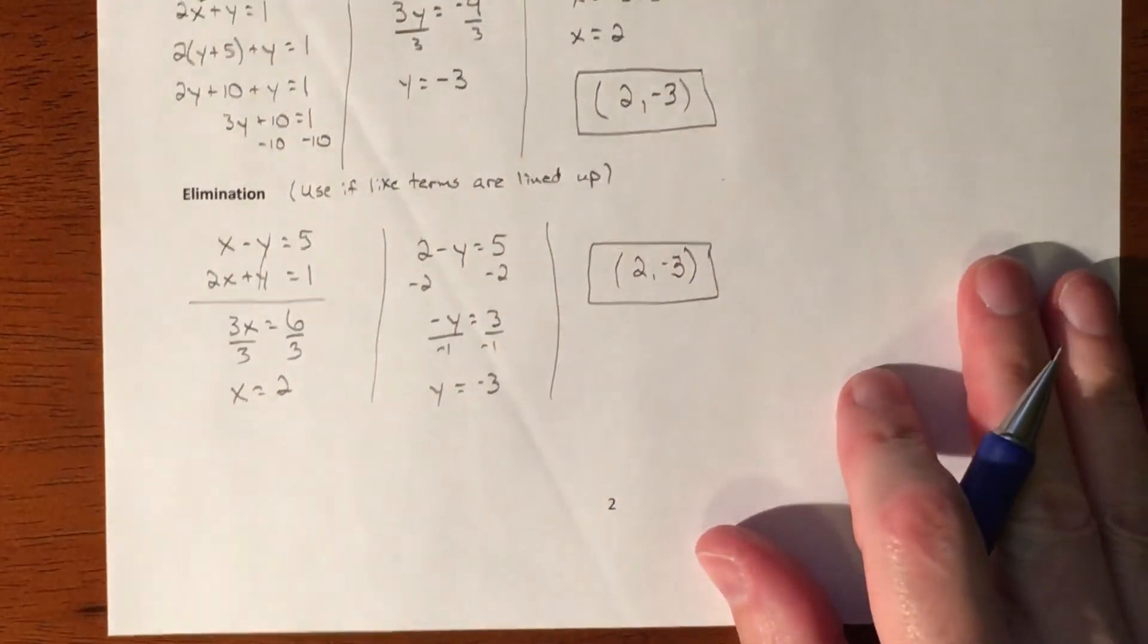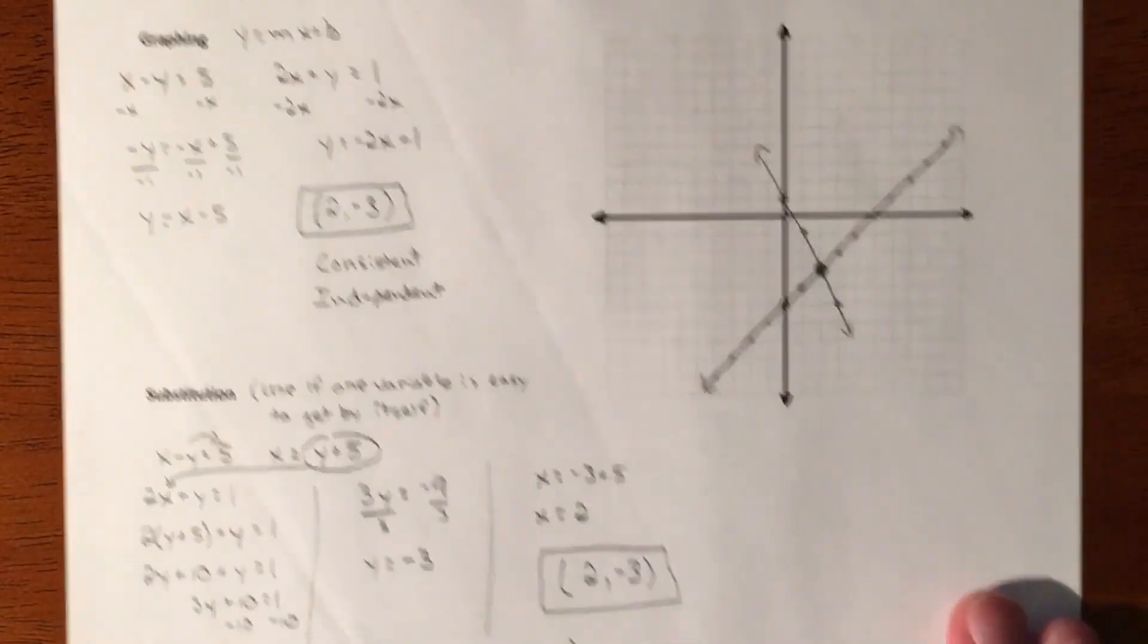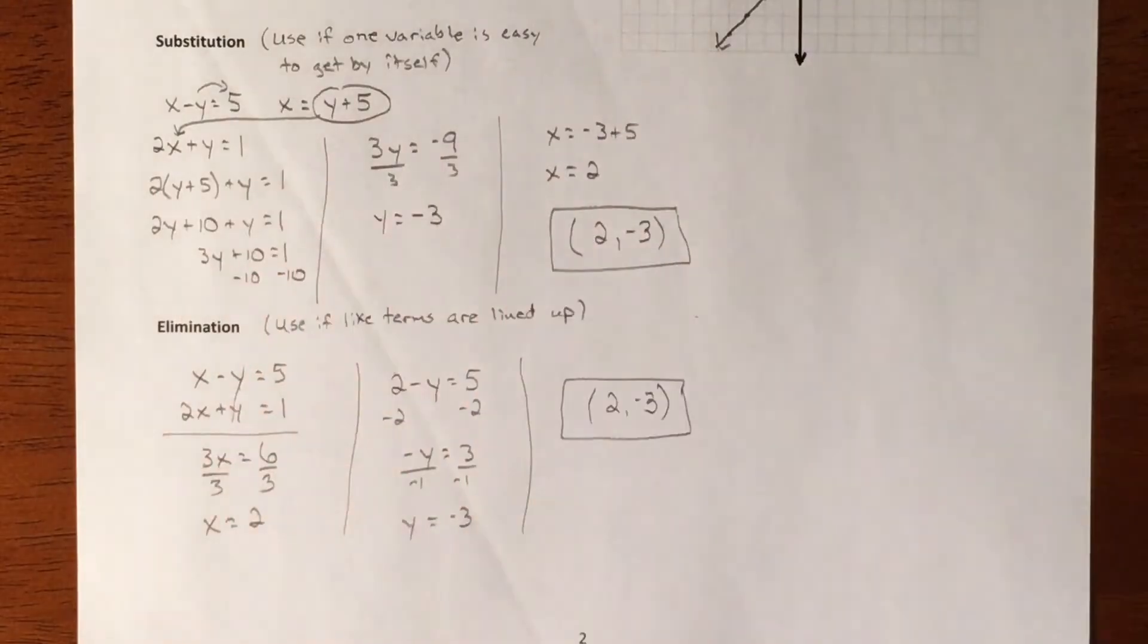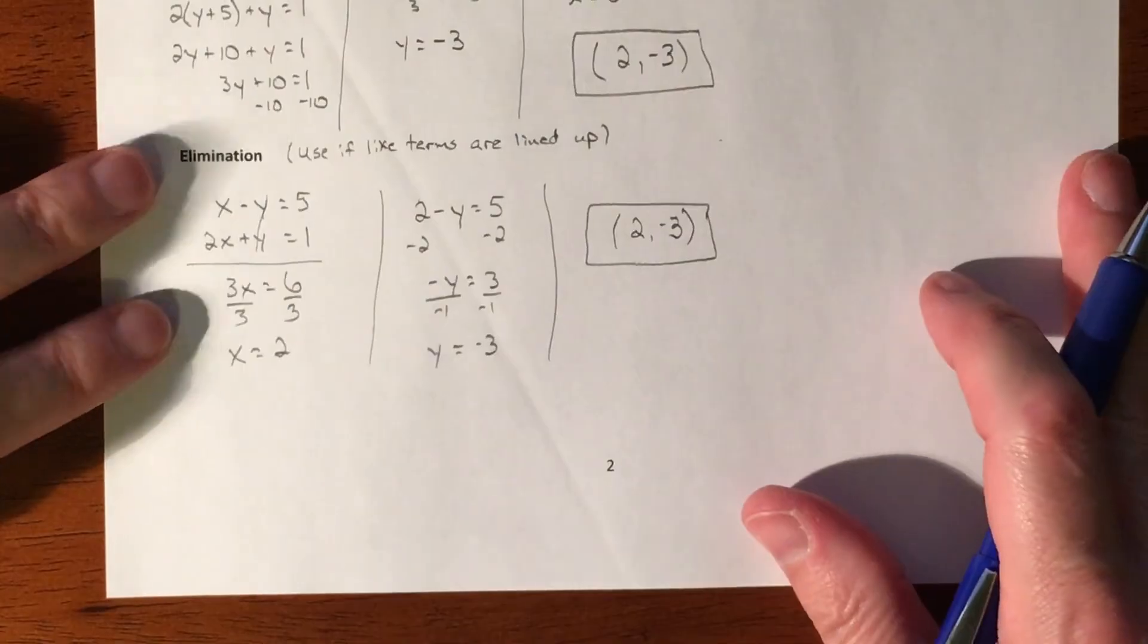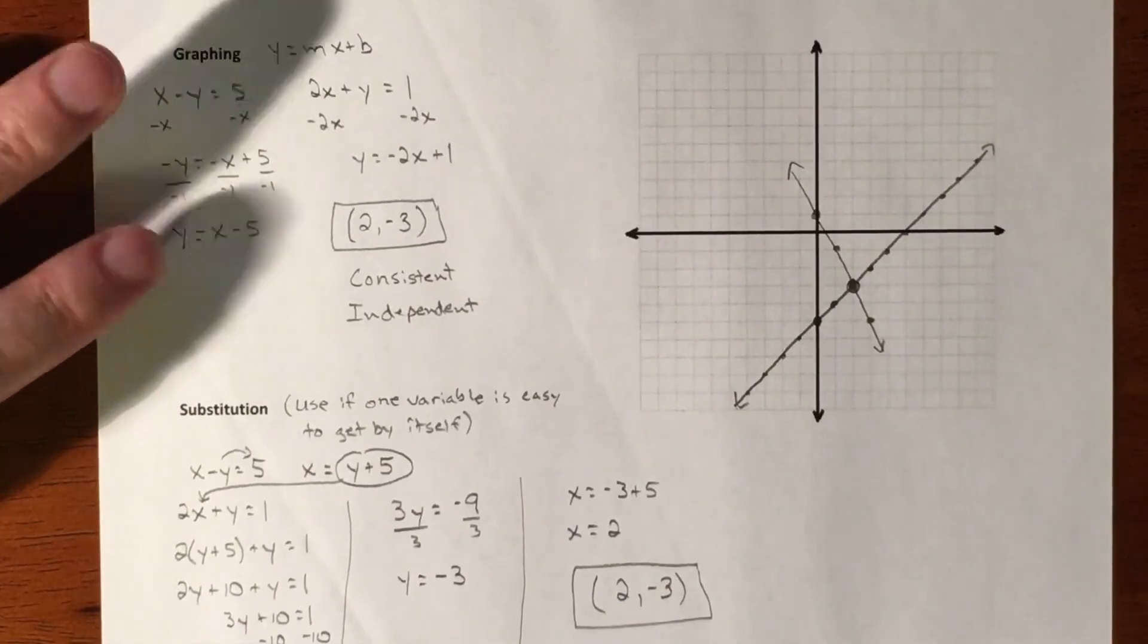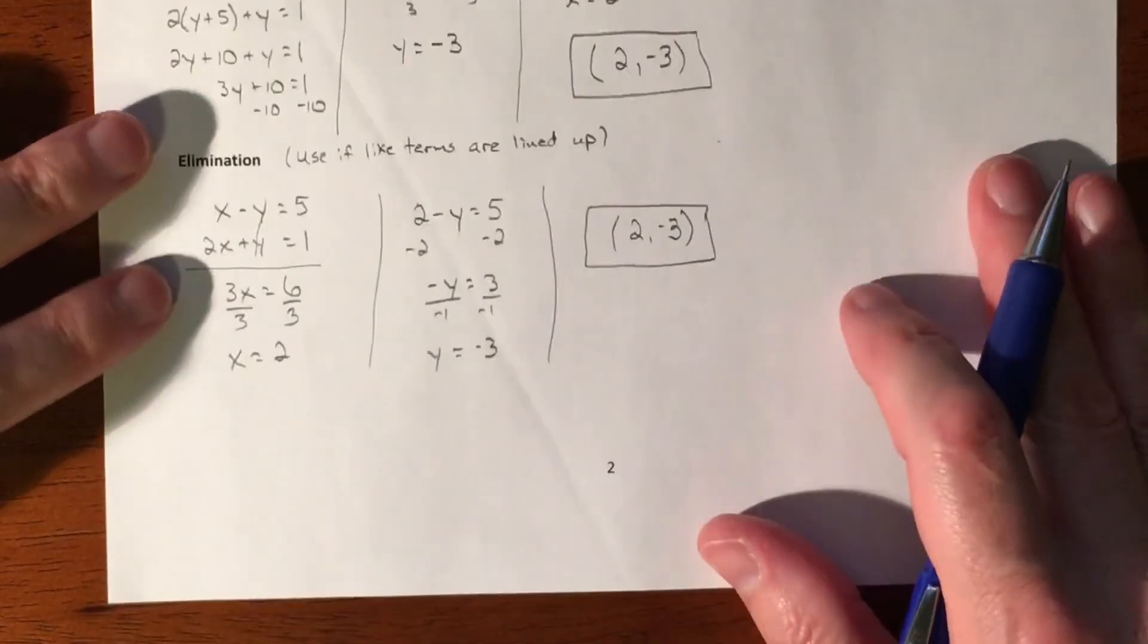So that is all three different methods solving that one problem. And then at some point, hopefully the directions don't force you to use a certain method. You can use whatever you want. So some of you may like substitution on certain problems. Some of you may like elimination. And again, graphing has its limitations. So I don't feel like I would jump into that right away. I would be trying to use substitution or elimination.